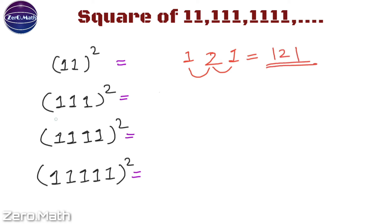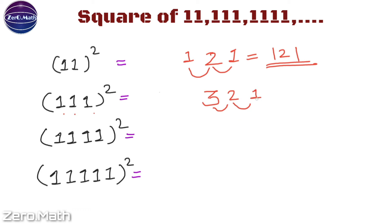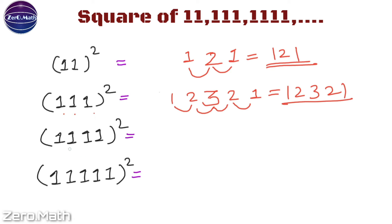Now let's figure out the square of 111. The number of digits in 111 are 3, so write down 3. Reduce 1 from 3 to get 2, then 2 minus 1 is 1 — stop when you reach 1. Follow the same procedure on the left hand side: 3 minus 1 is 2, and 2 minus 1 is 1. So the answer is 12321, which is the square of 111.